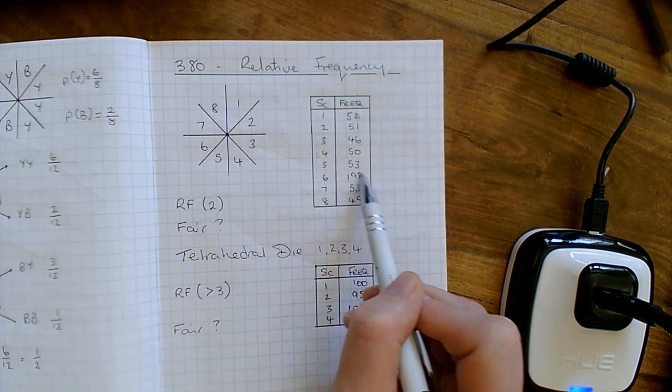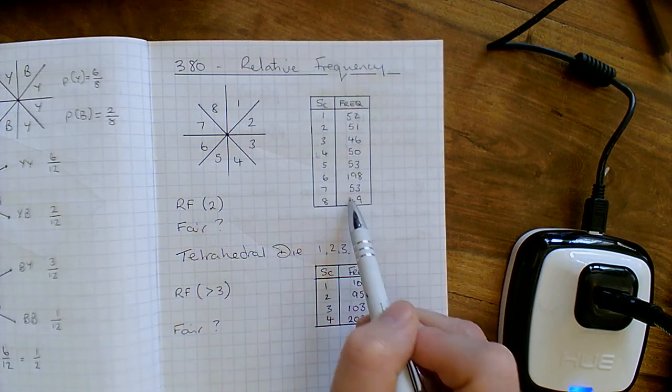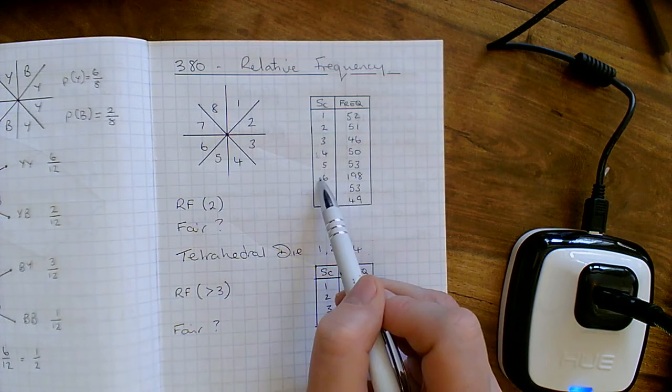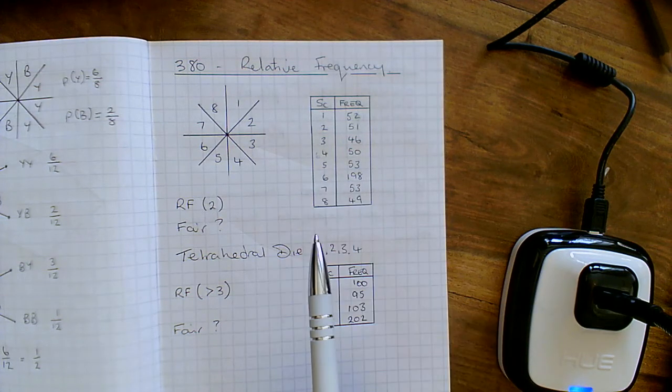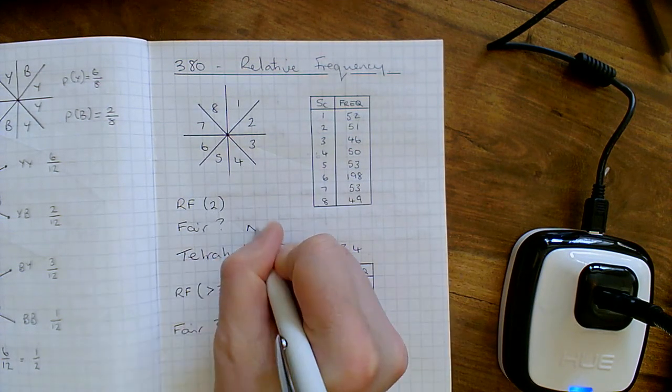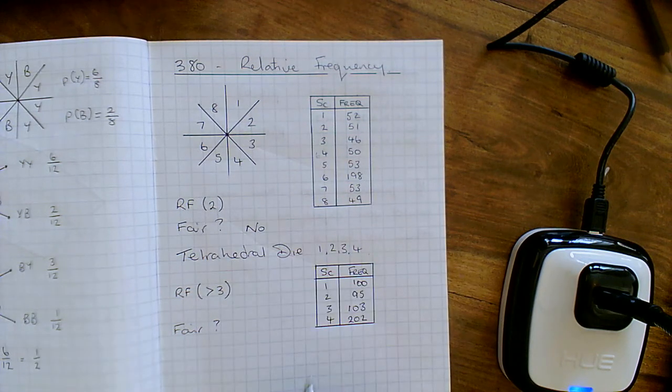So why is it nearly 4 times more likely to get a 6 than any other number? We don't know. So I would say from the bat, this is not a fair spinner and there's something going wrong with number 6. So is it fair? I'm going to go with no straight away for that one.